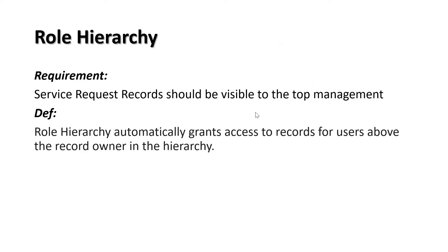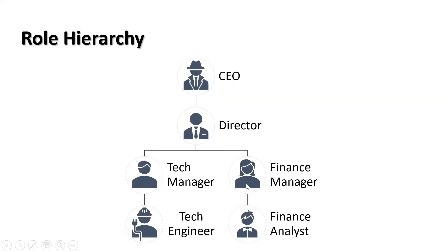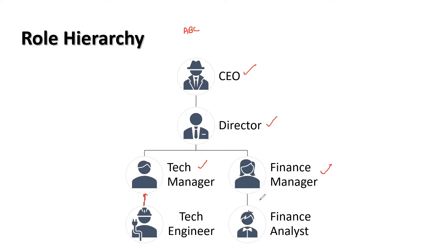The beauty of the role hierarchy is that its configuration is very simple. So let's see the organization structure first, and then we'll define our role hierarchy in Salesforce. This ABC company has the structure: they have the CEO at the top, followed by the director, and two roles reporting to the director — the tech manager and the finance manager. Under the tech manager there would be multiple people. Same goes with the finance manager. Under the tech manager we have another role, which is nothing but technician engineer, with multiple people working under that role reporting to the technician manager, who reports to the director, who reports to the CEO.